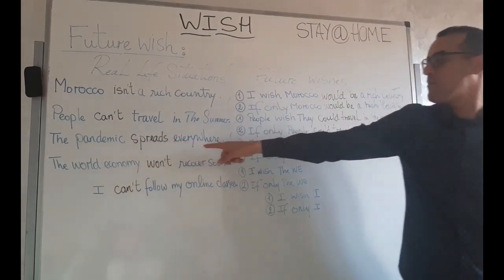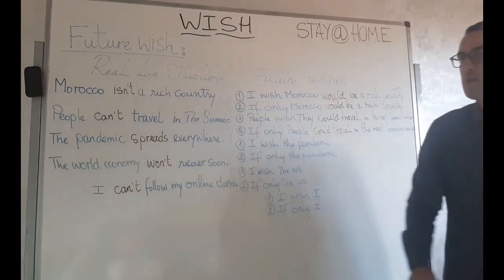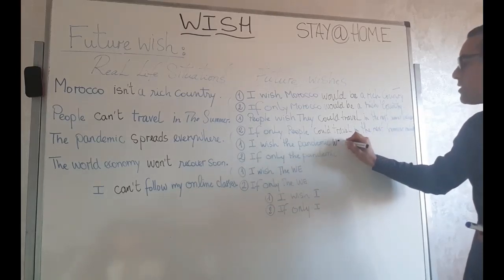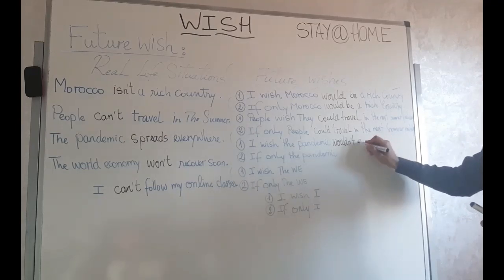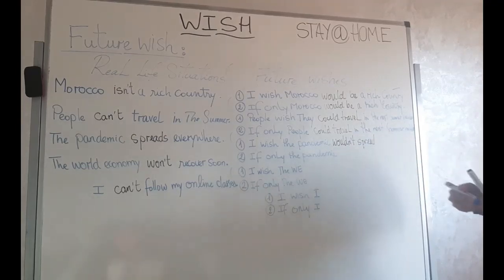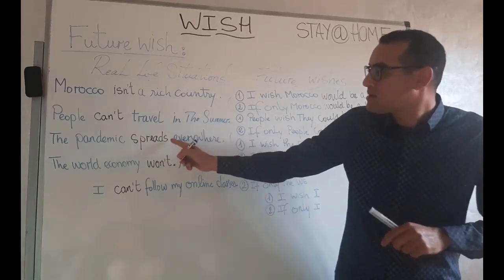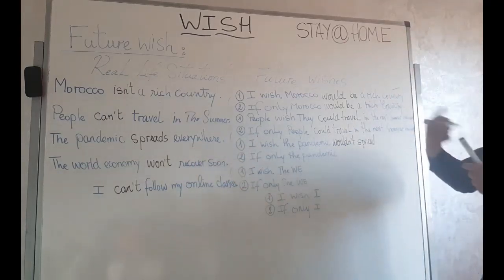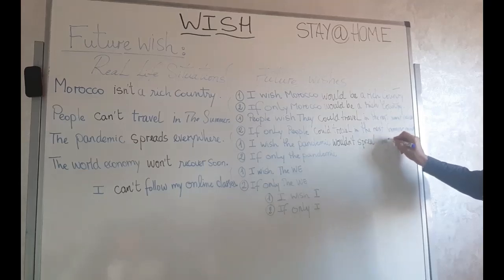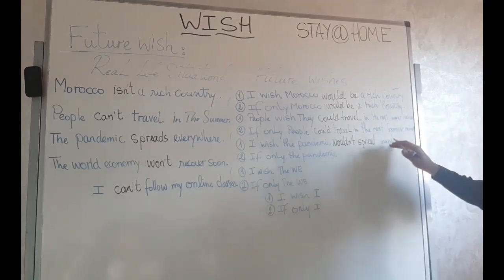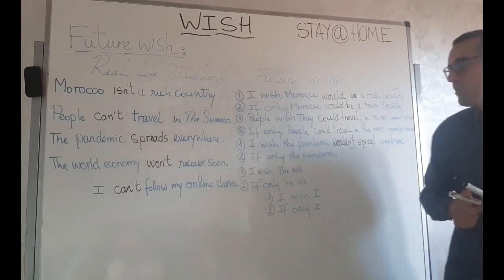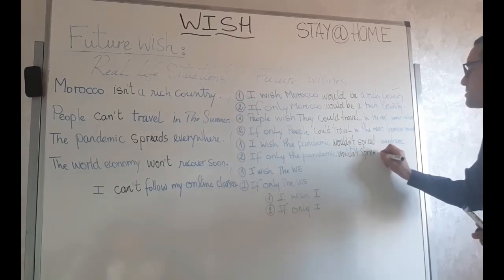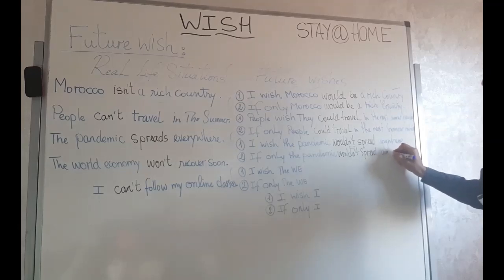Third example: The pandemic spreads everywhere. Since the verb is positive, we use 'everywhere.' But in the wish form, which is negative, we change it: I wish the pandemic wouldn't spread anywhere — not 'everywhere' but 'anywhere' because of the negative form. Or: if only the pandemic wouldn't spread anywhere.